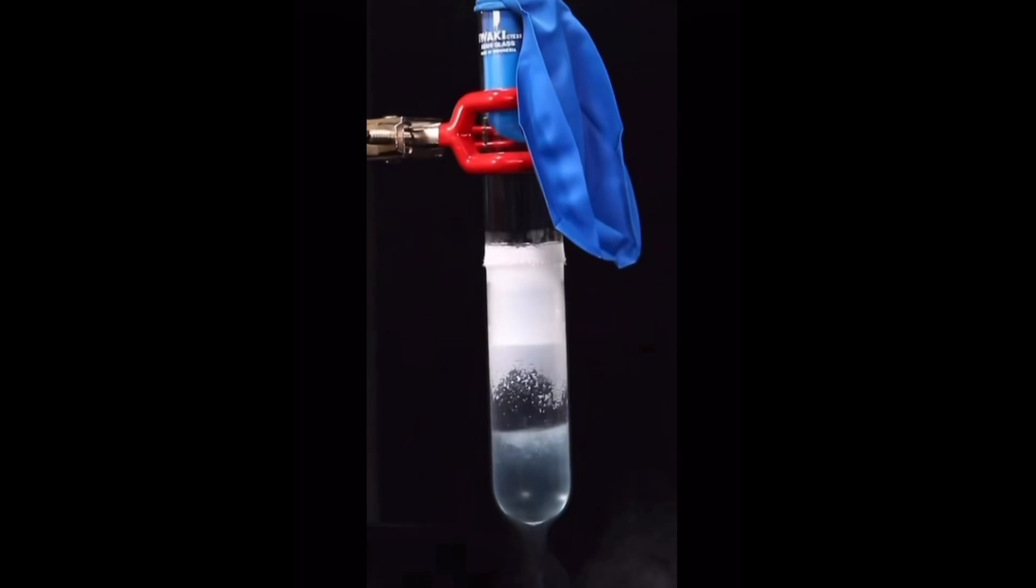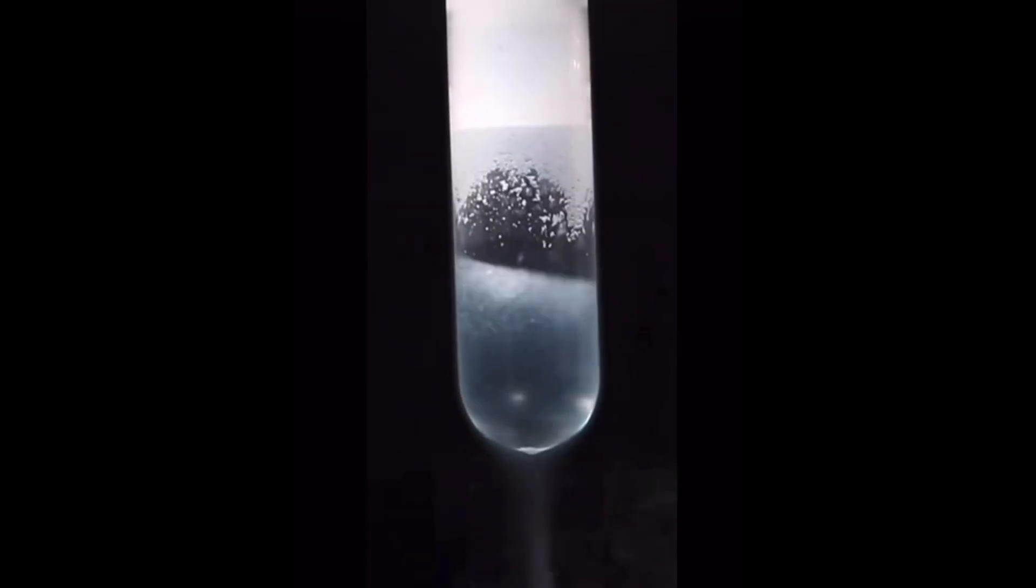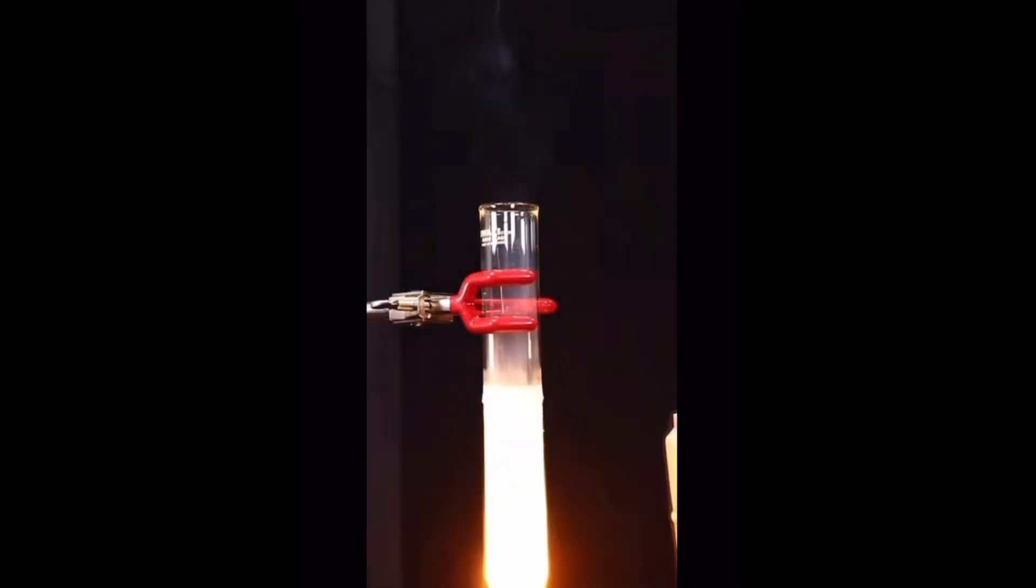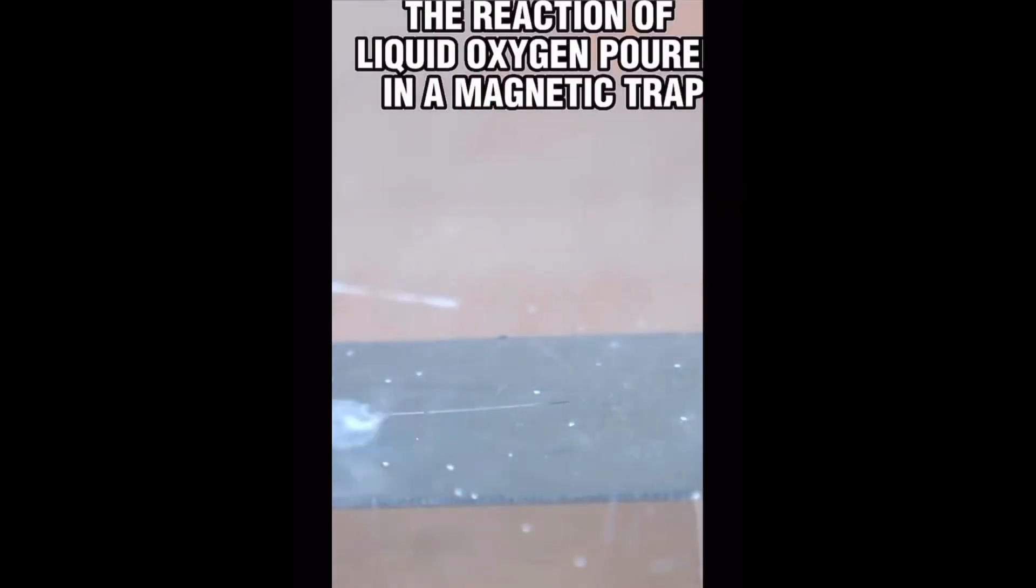What's cooler than oxygen? Liquid oxygen. Let's explore its fascinating properties. At minus 183 degrees Celsius, oxygen turns into a pale blue liquid. This extreme cold gives it some amazing properties. Did you know? Liquid oxygen is magnetic.